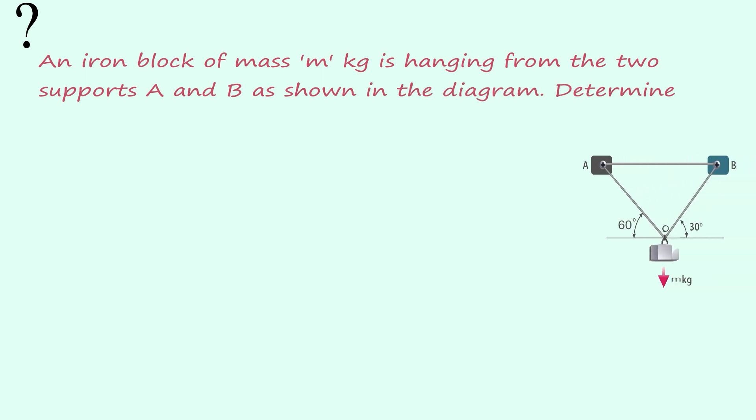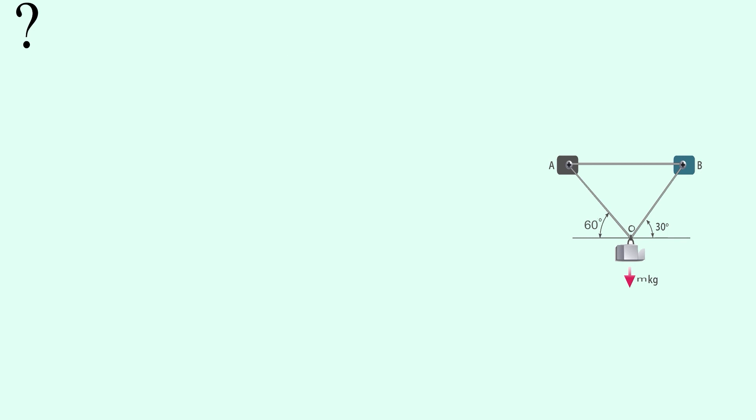An iron block of mass m kg is hanging from the two supports A and B as shown in the diagram. Determine the tensions in both the ropes. First let's draw a free body diagram for the given condition.